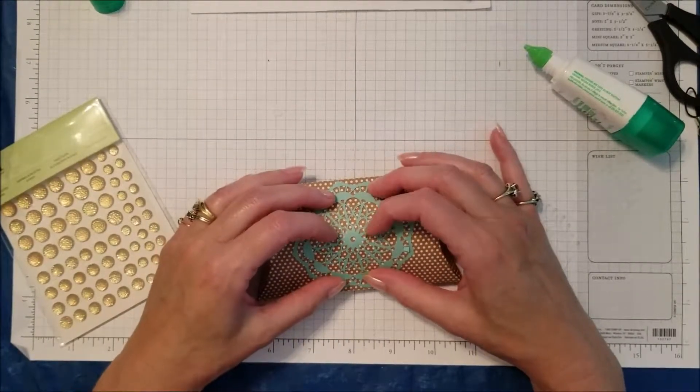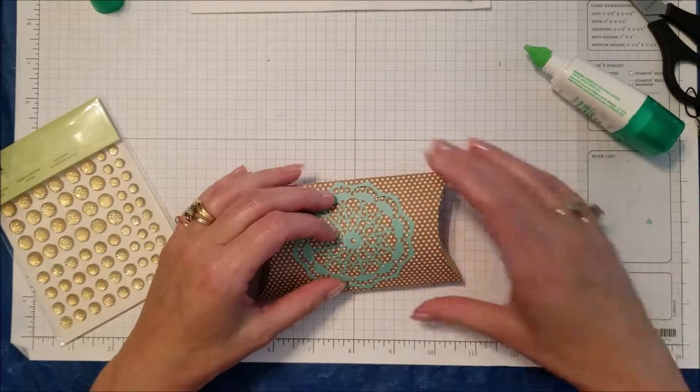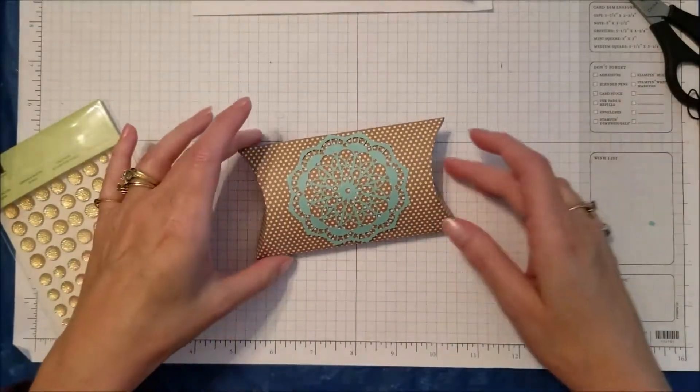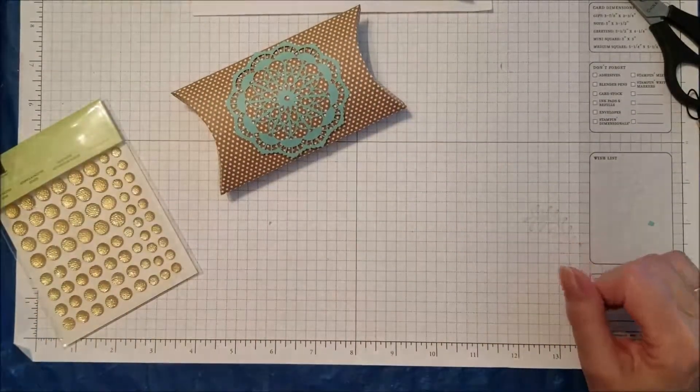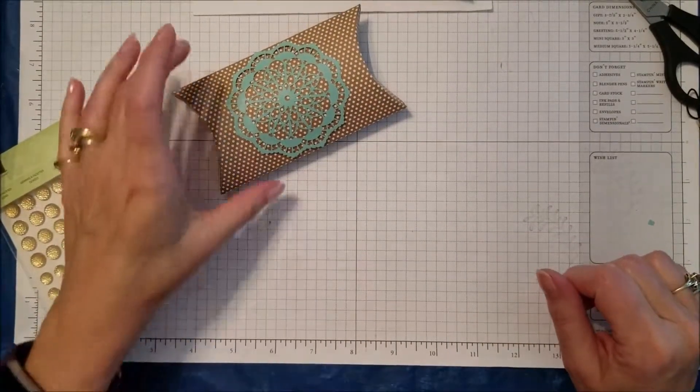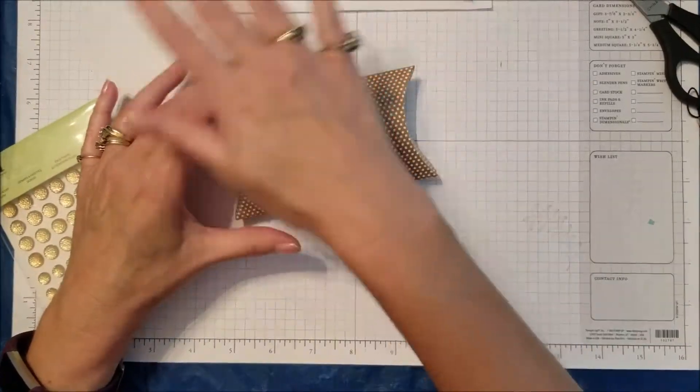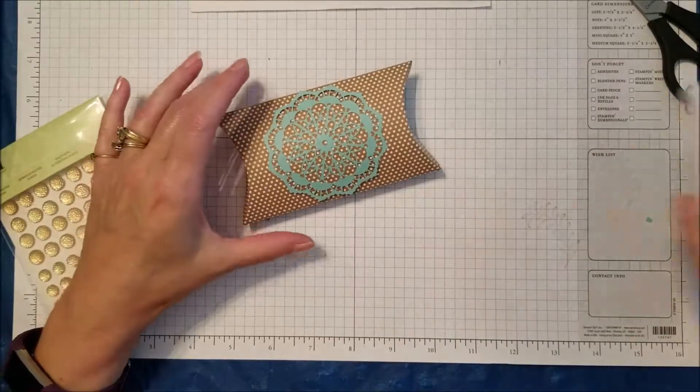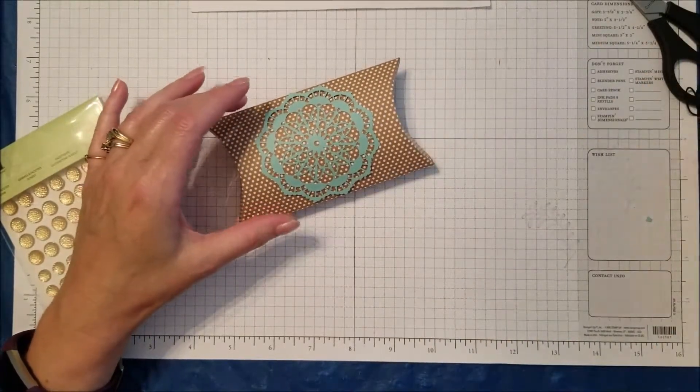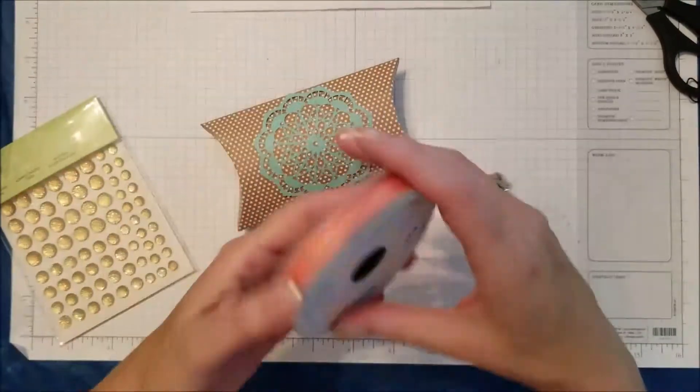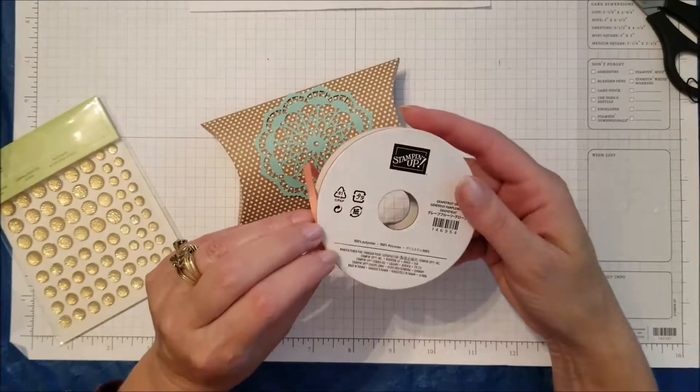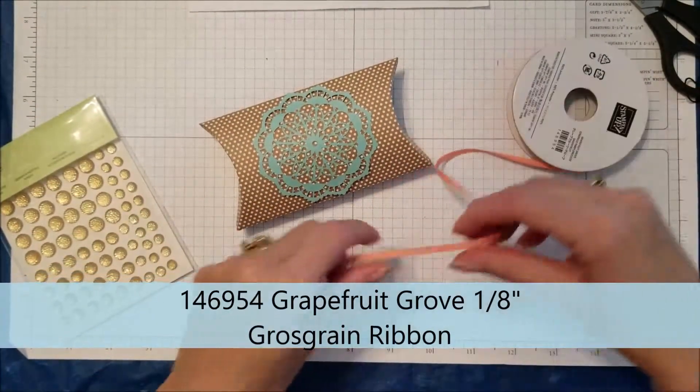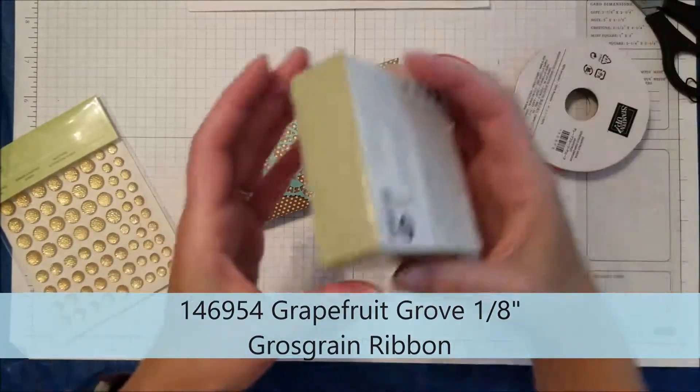Next, I'd like to use some ribbon. I wanted to coordinate with the colors that were in the doilies, so I'm going to be using grapefruit grove. This is our grosgrain ribbon that is in the end colors.